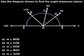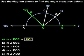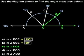Let's take a look at the angles now shown superimposed on the protractor. Notice that the measure of angle BOE is 130 degrees, the measure of angle COE is 80 degrees, and the measure of angle DOE is 45 degrees.